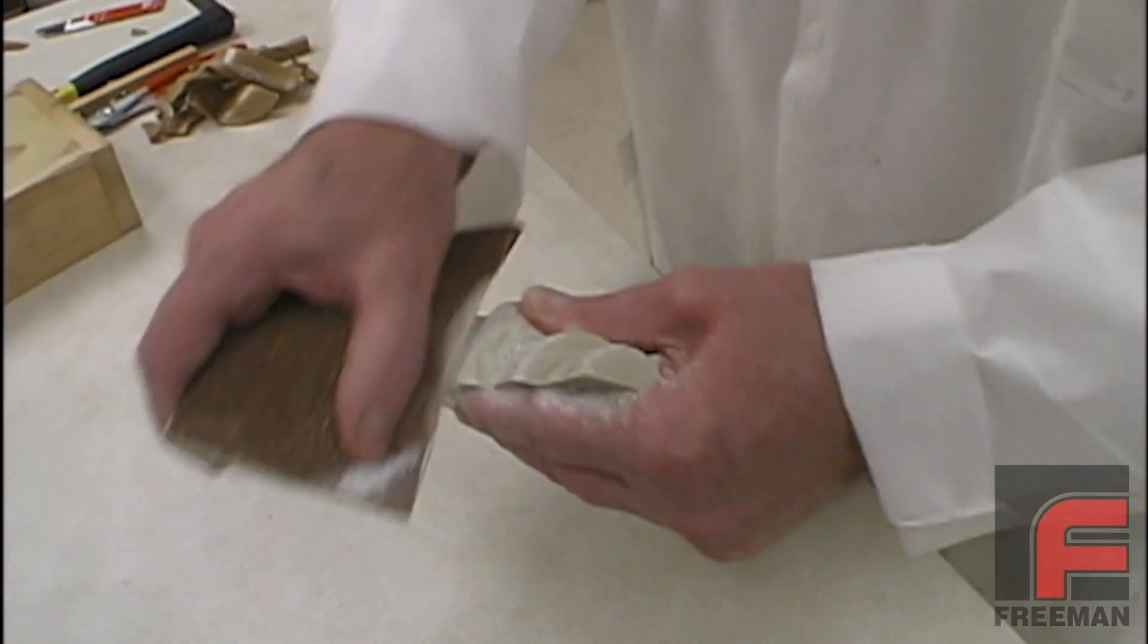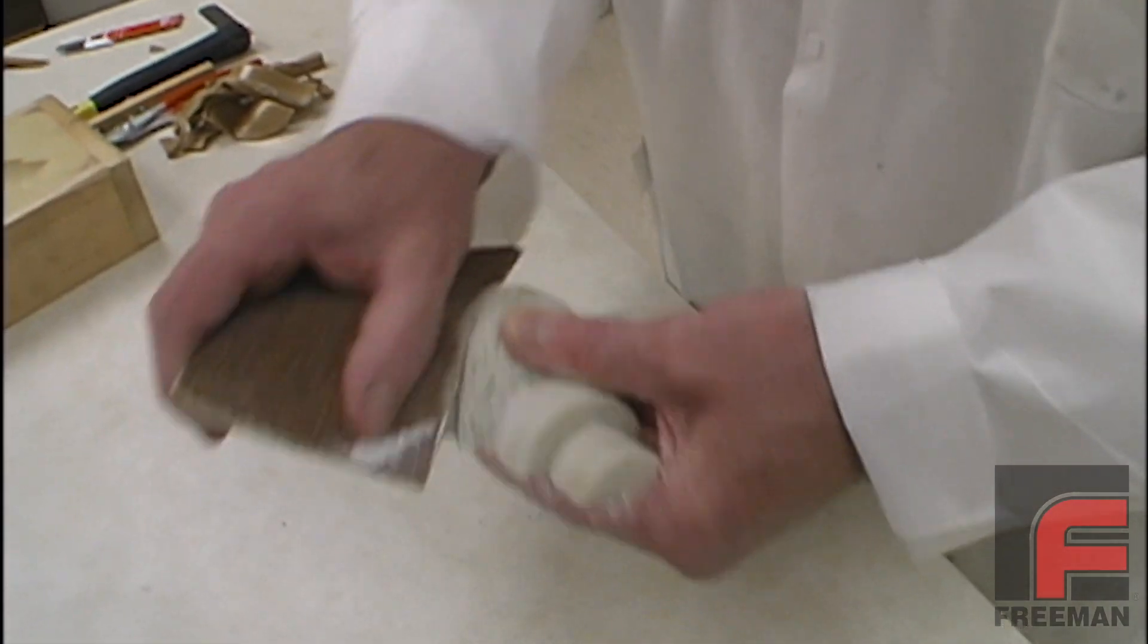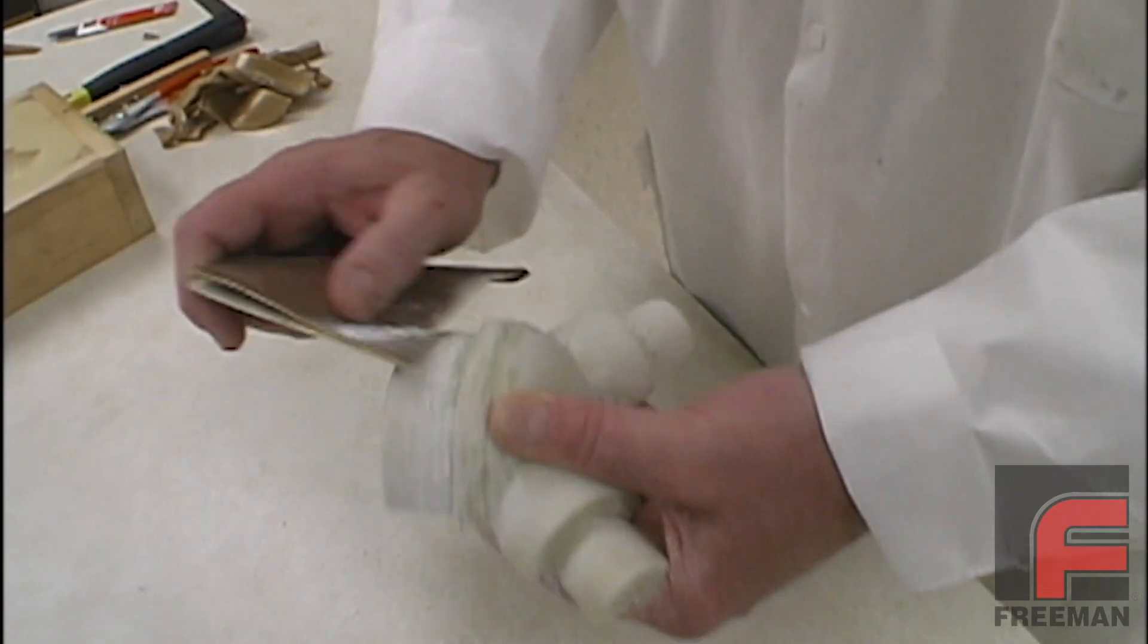Finally, we rough up the surface of the core with sandpaper to help it adhere to the surface cast layer, which we are now ready to pour.